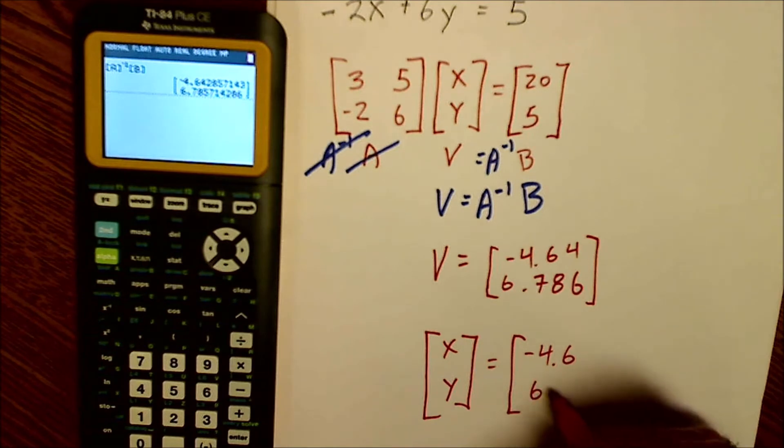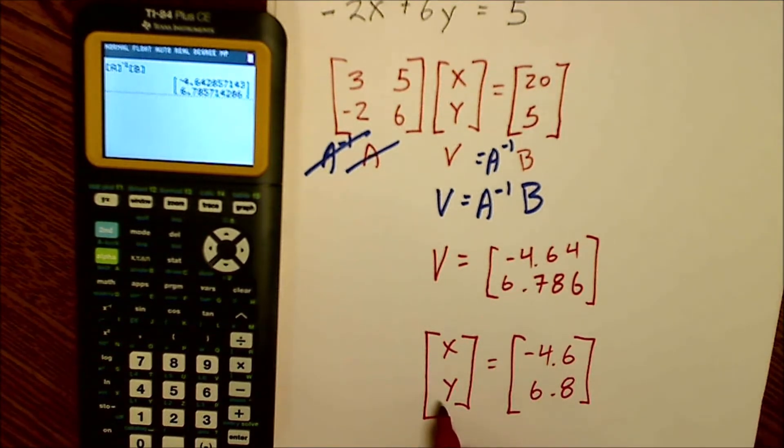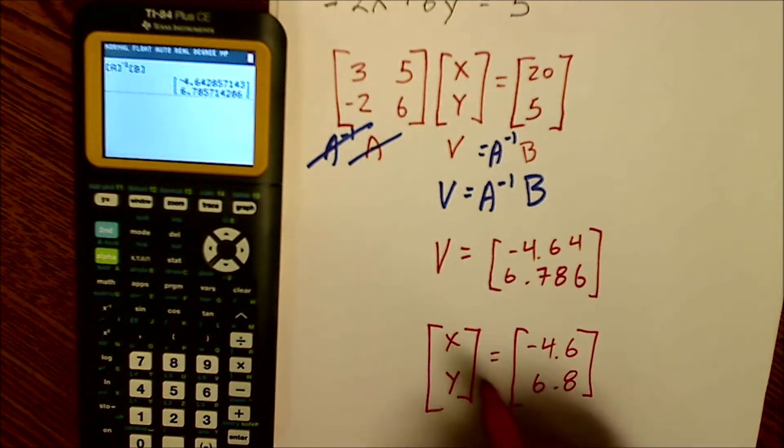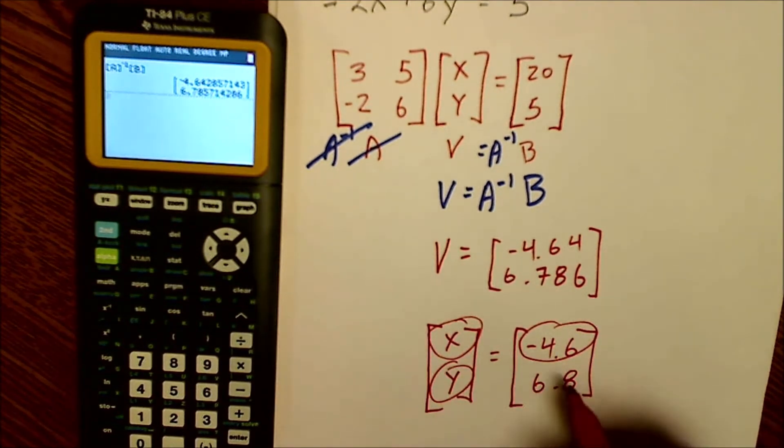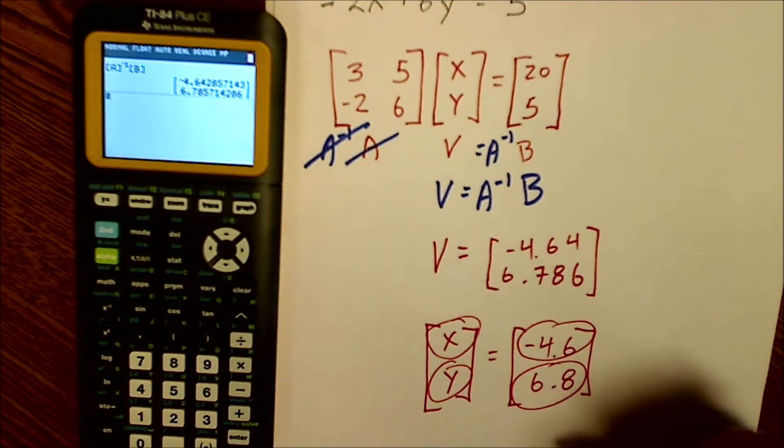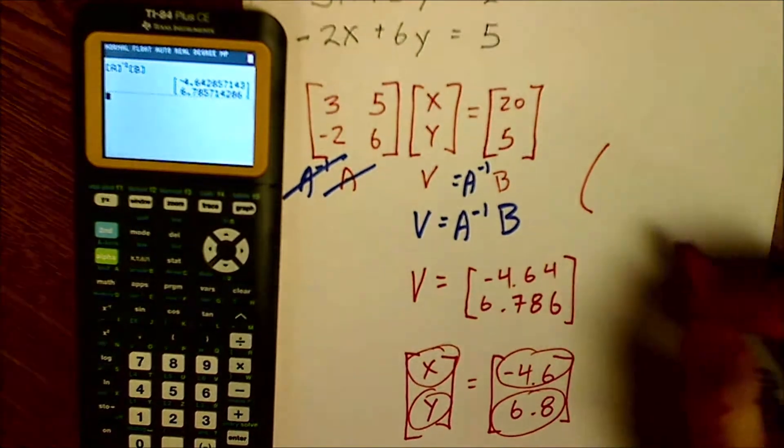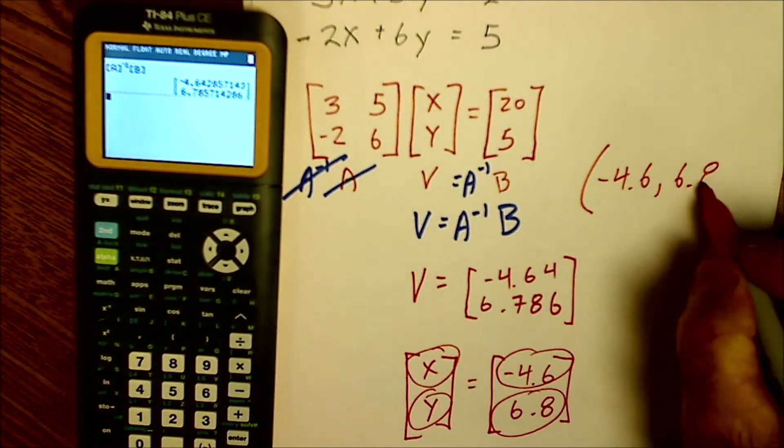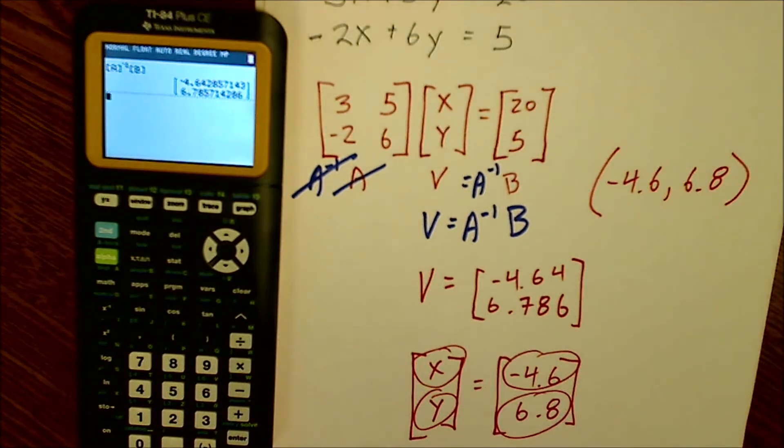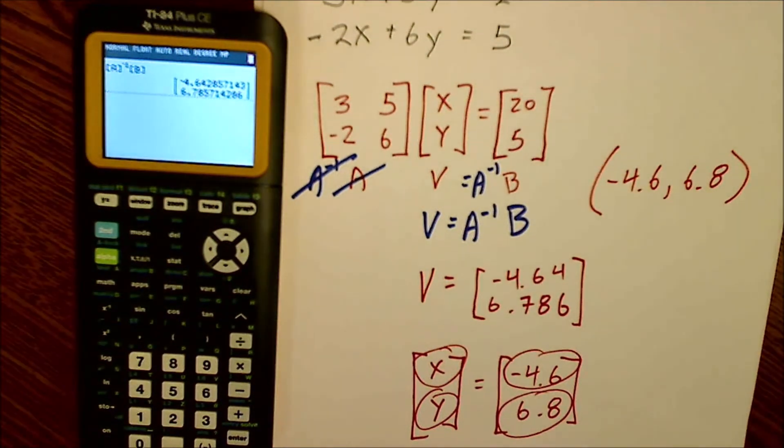Remember my variable matrix here is XY. And that thing is equal to another two by one matrix, negative 4.6, 6.8. Well, if a two by one is equal to a two by one, that means this element has to equal this element, and this element has to equal that element. So I solve for X and Y. It's going to be an ordered pair. X is negative 4.6, Y is 6.8. And that's how easy it is to solve equations with matrices.